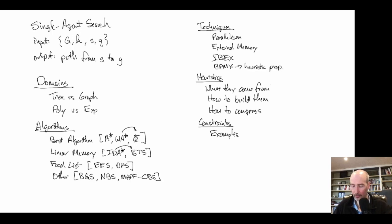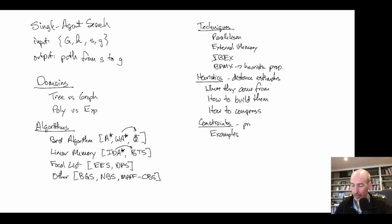We also looked at constraints, though less thoroughly than heuristics. We looked at where constraints come from and how they're used in search and how they differ from heuristics. For instance, constraints appear in CBS and are used very differently than constraints added to a classical algorithm like A*. Heuristics are distance estimates, whereas constraints are generally used to prune edges.